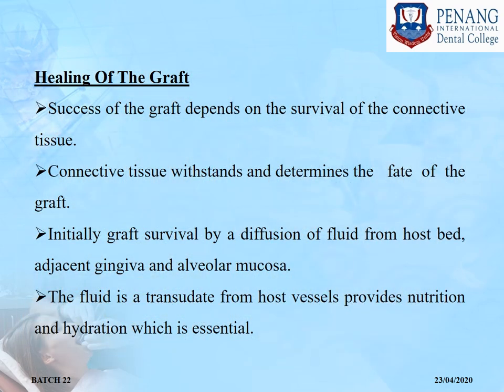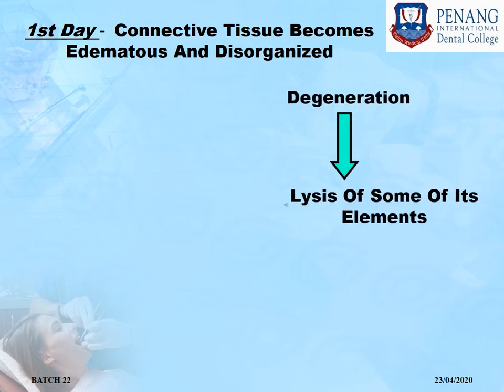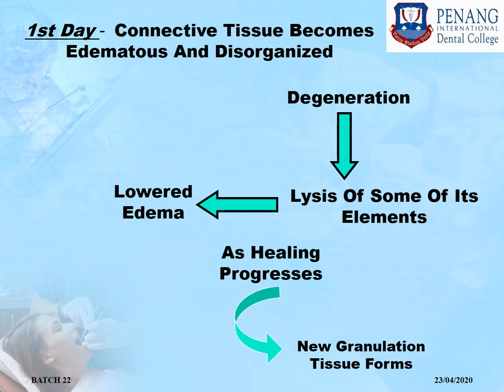Healing of the graft: the success of the graft depends on the survival of connective tissue. Connective tissue withstands and determines the fate of the graft. Initially, graft survival is by diffusion of fluid from the host bed, adjacent gingiva, and alveolar mucosa. The fluid is translocated from host vessels to provide nutrition and hydration, which are essential. On the first day, connective tissue becomes edematous and disorganized, with degeneration and lysis of some elements. This phase is called the initial phase.